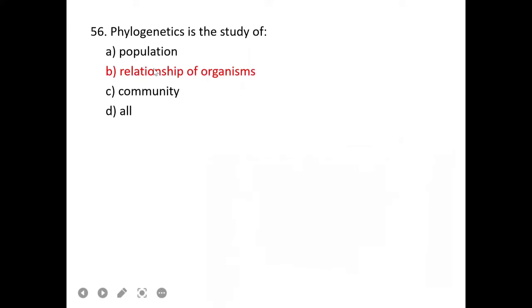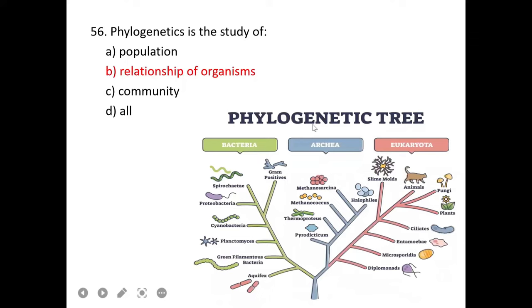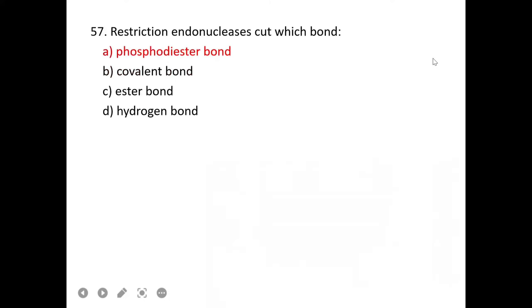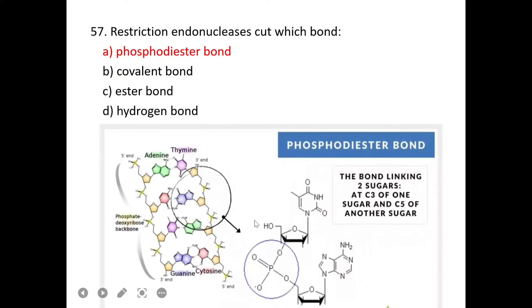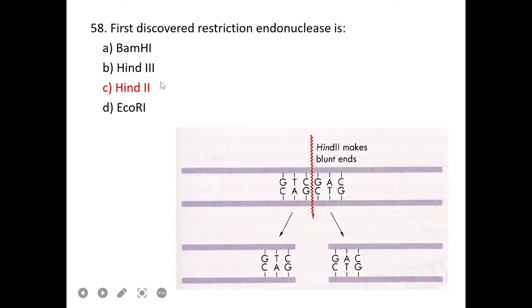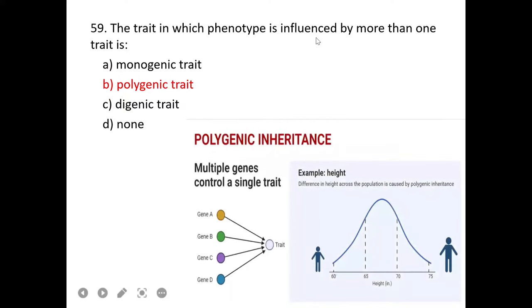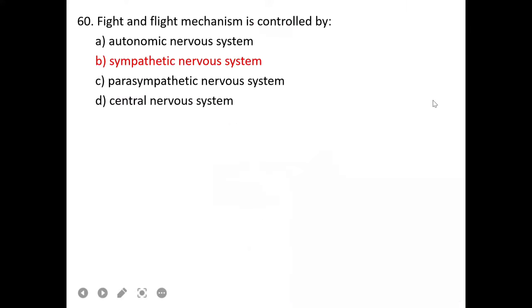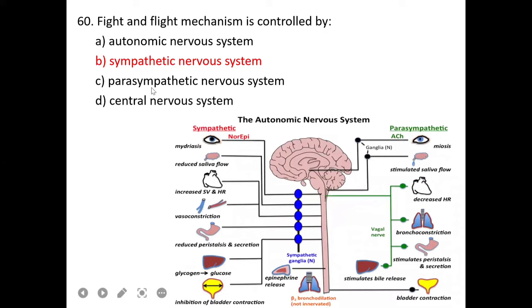Organisms that are found on the bottom are called benthos. Nekton are active swimmers like sharks, and plankton are floating organisms. Neuston are minute organisms that live on the water surface and move. So benthos, A is correct. Alpha and beta structure of protein are secondary structure. B is correct. DNA with histone protein is known as nucleosome.